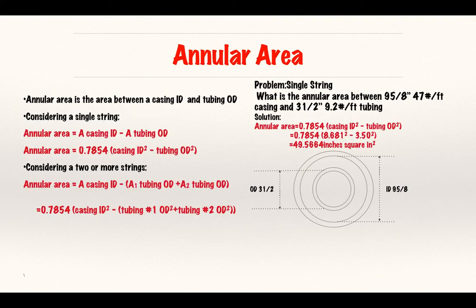Annular area is the area between a casing ID and a tubing OD. For a single string, I have my casing and I have my tubing string.